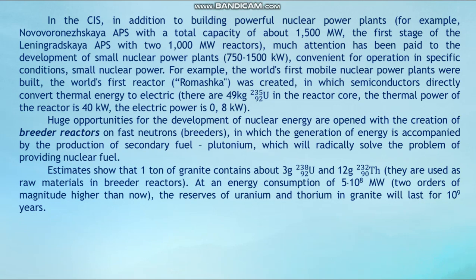The world's first mobile nuclear power plants were built. The world's first reactor 'Romashka' was created, in which semiconductors directly convert thermal energy to electric energy. There are 49 kg of U-235 in the reactor core. The thermal power of the reactor is 40 kW and the electric power is 0.8 kW.